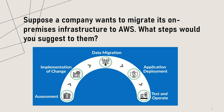Choose the right services: once you know which components are important, choose the right AWS services that can replace them. Develop a migration plan: after selecting the AWS services, develop a migration plan and prioritize the components that need to be migrated first. Test the migration plan before actually migrating, test it in a test environment to ensure that it works as expected.